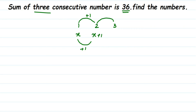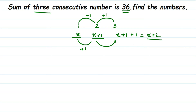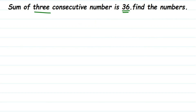From two, I have to add one again to get three. So here also, to get the next consecutive number I add one to the previous, giving x plus one plus one, which becomes x plus two. So x, x plus one, and x plus two are the three consecutive numbers we are assuming.